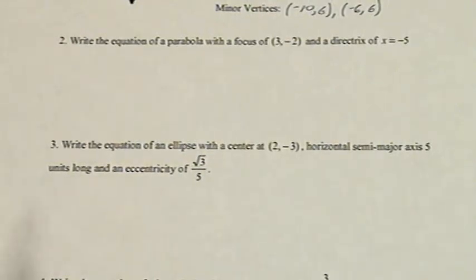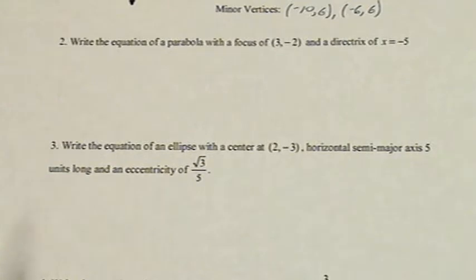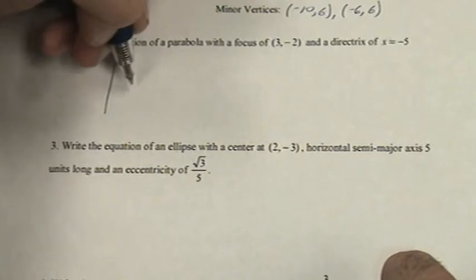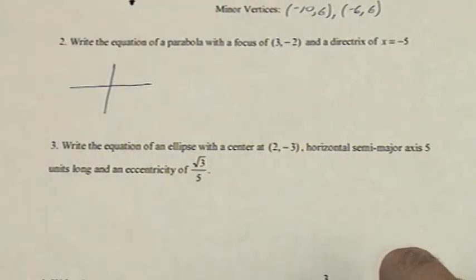For this problem we are asked to write the equation of a parabola with a focus at (3, -2) and a directrix of x equals -5. I highly recommend that we start by sketching a quick graph.